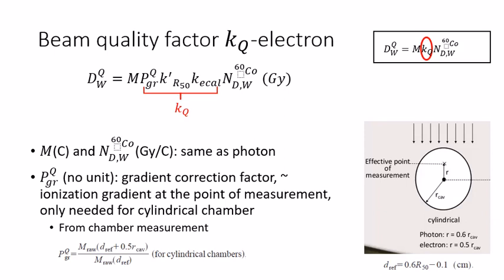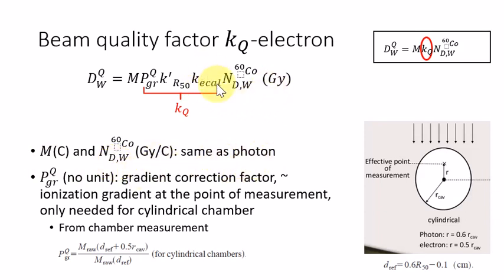Let's take a look at how to obtain the beam quality factor for electron beam. For electron beam compared to photon beam, it's slightly complicated. The KQ factor actually equals three factors multiplied together, if you look at this TG51 formula. In this formula, the corrected chamber reading and the NDW Co-60 factors are the same as photons. What's left is the KQ factor.